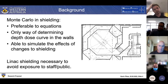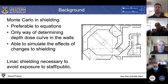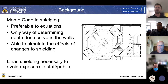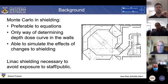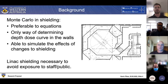Monte Carlo in radiation shielding has become a preferable method, especially compared to the equations provided by the NCRP - the National Council on Radiation Protection. The more analytical techniques are not as useful for complex bunker geometries. You can see here an image of the MARY bunker, which has quite complex geometry, meaning the simpler equations don't really provide particularly relevant shielding calculations. Monte Carlo also allows us to individualize the shielding calculations much more to our specific bunker.